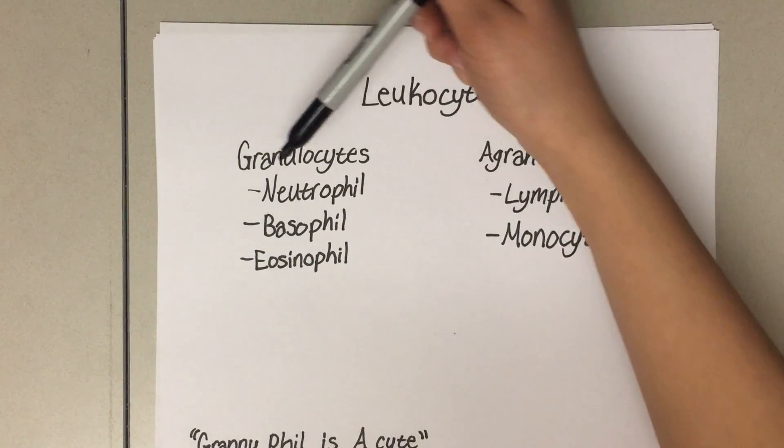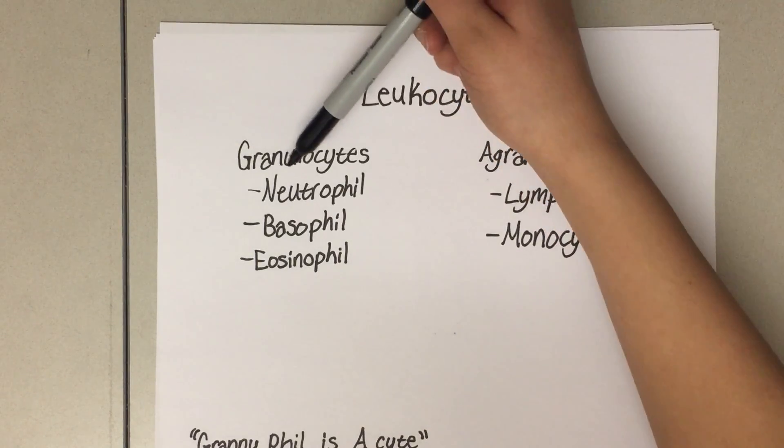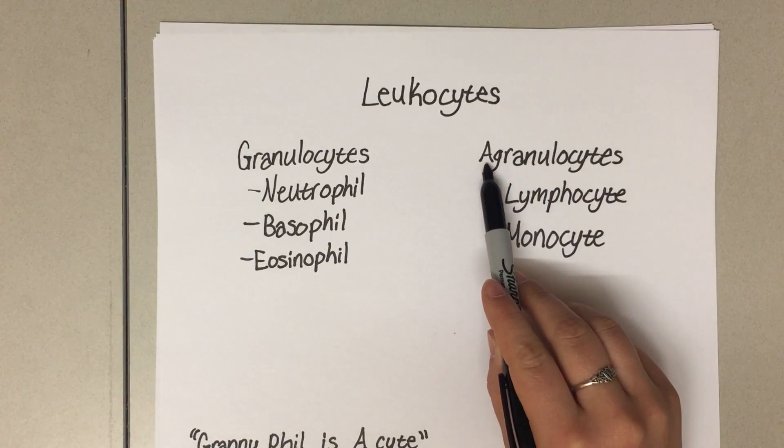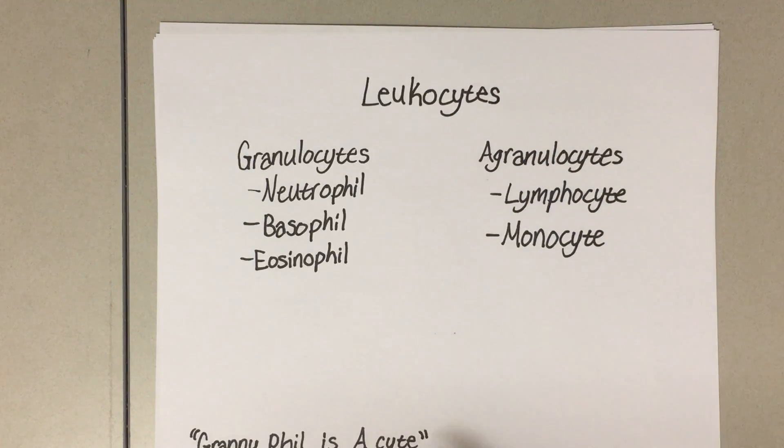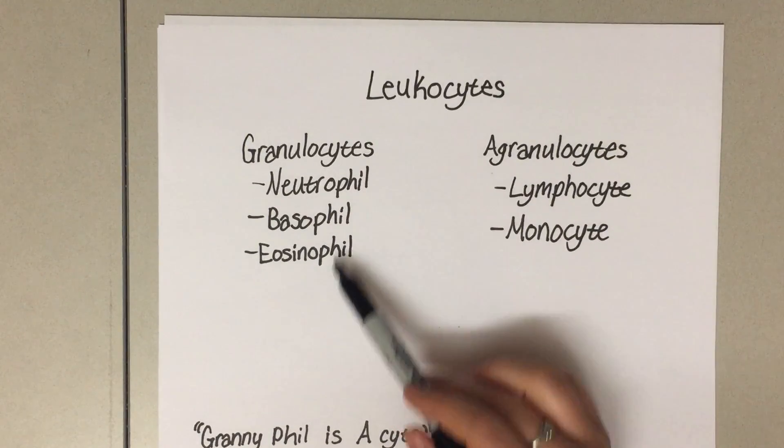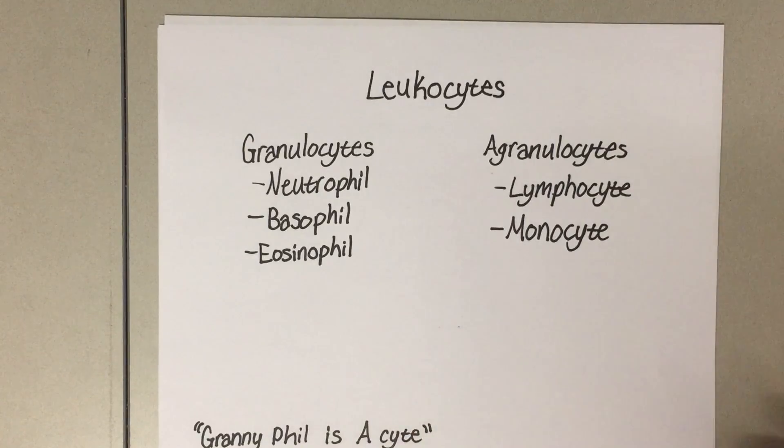And all of the agranulocytes end in site. So "granny phil is a site" can help you remember which leukocytes have granules and which do not. Now for their specific functions.